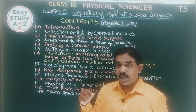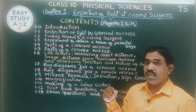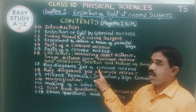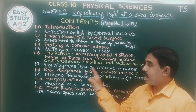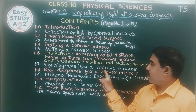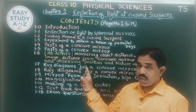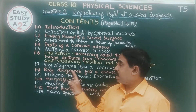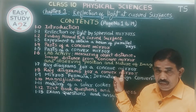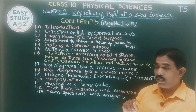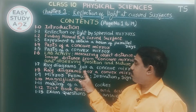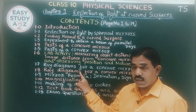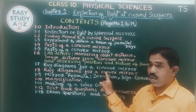Next we have the most important concept in this chapter — ray diagrams for a concave mirror. We have six ray diagrams related to the concave mirror. Then we have ray diagrams for a convex mirror, with two ray diagrams related to the convex mirror.